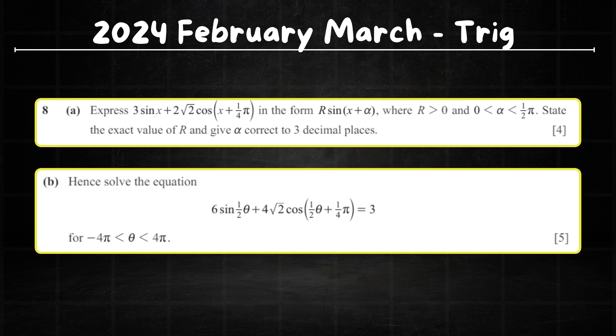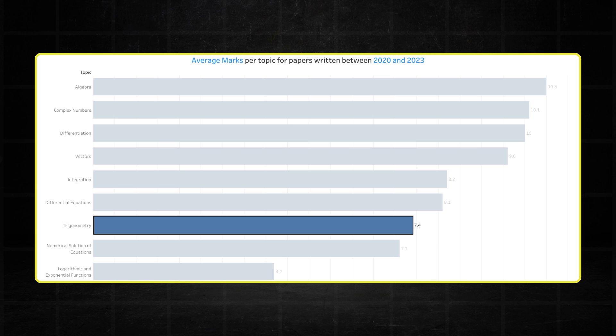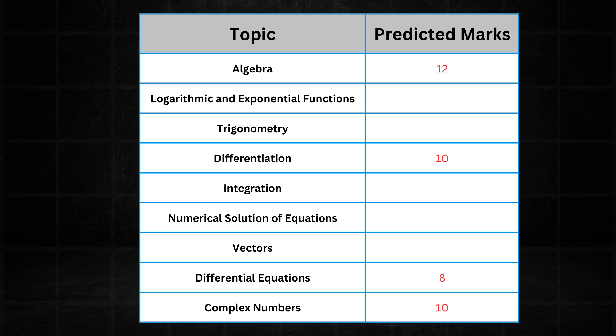The trigonometry question was also a bit more challenging than usual. It came with a weird looking harmonic identity, that's the R sine question, which carried 4 marks, followed by 5 marks of equation question. Given that trigonometry isn't done well historically, I don't think this high performance will carry over into May-June. So I expect it to drop down to around 7 marks.